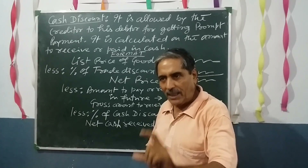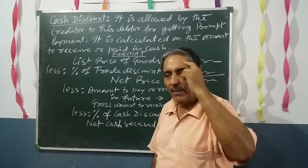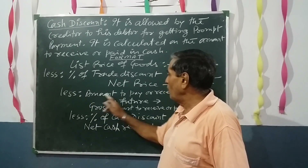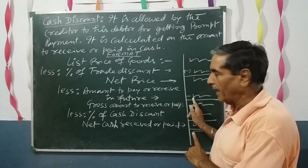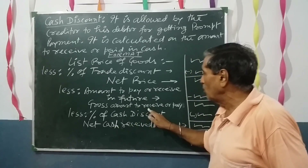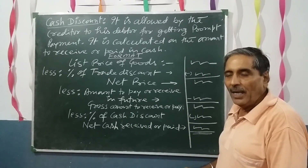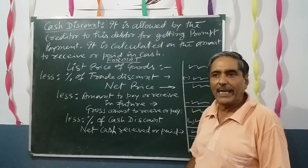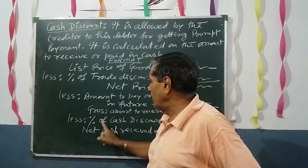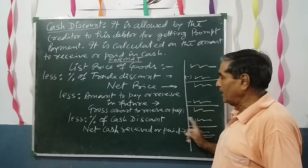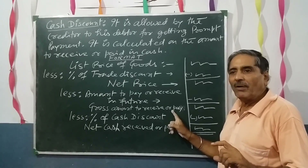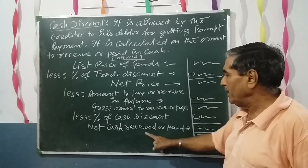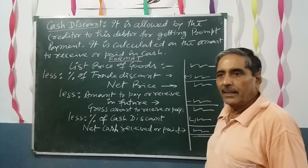Since he is giving only 40% now and 60% in future, we will allow him discount only on the 40% paid now. The amount to be paid or received in future is subtracted, and whatever remains is known as the gross amount to receive or pay in cash right now. On this gross amount only, we calculate the cash discount percentage. After subtracting the cash discount, you get the net cash received or net cash paid.